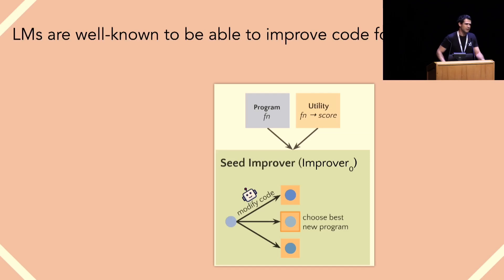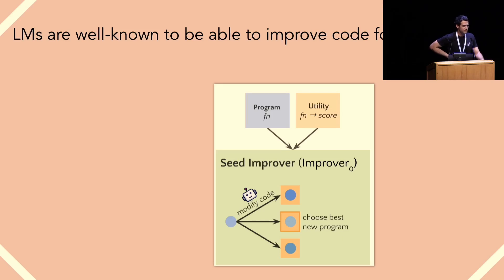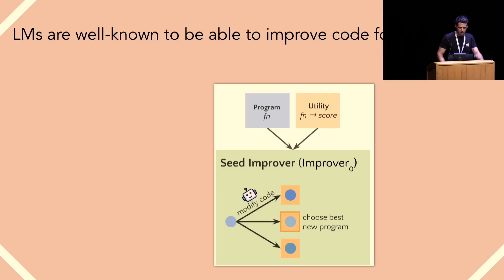It's well known at this point that language models are able to improve code for a given task. What that means is you pass the language model some program and you can ask it to improve the program. You can give it some utility function to evaluate whether the program improved. A very naive way to do this is to simply ask the language model to improve the program n times and return the best one according to some utility function.